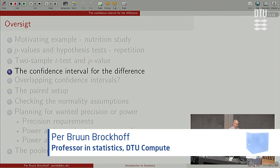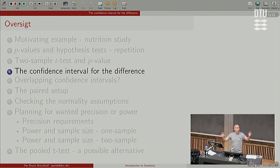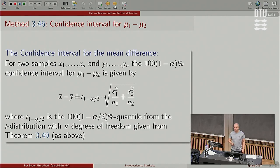After hypothesis testing, we should also know how to quantify a potential difference between two things, including the uncertainty about such a quantification. That is called a confidence interval. We can do that also for the comparison of two. Here it comes: what is the method of the confidence interval for the difference between two means?